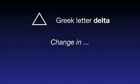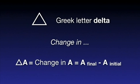Before we move on, let's quickly introduce a symbol used very often in physics. Delta is a Greek letter used to indicate the change in a physical quantity. For example, for a generic physical quantity A, delta A means the change in A, or the final value of A minus the initial value of A. Note that if A is a vector, A final minus A initial refers to vector subtraction.